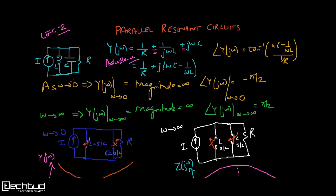Now, what happens at DC frequency when ω tends to 0? The capacitor will act like an open circuit for ω→0. So the circuit will look like this: you have closed the switch on the inductor side, so that is a short circuit path.